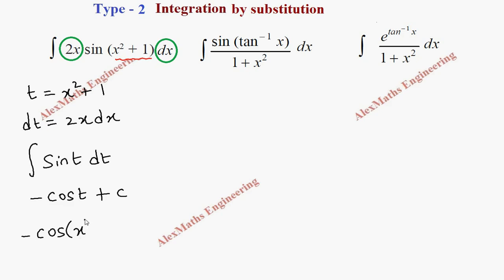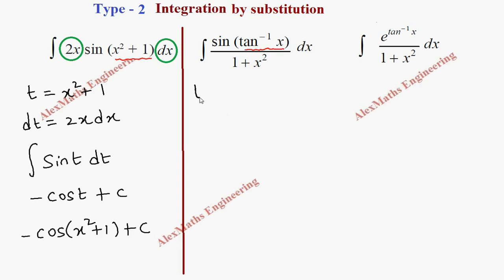We replace t with x² + 1, giving the final answer: minus cos(x² + 1) + c. Moving to the next problem, the inner function is tan⁻¹(x), so we let t = tan⁻¹(x).